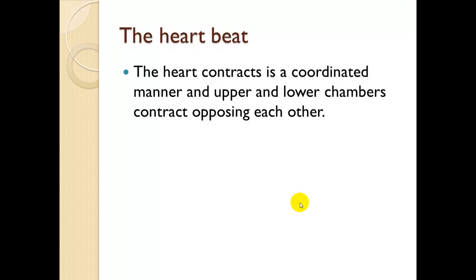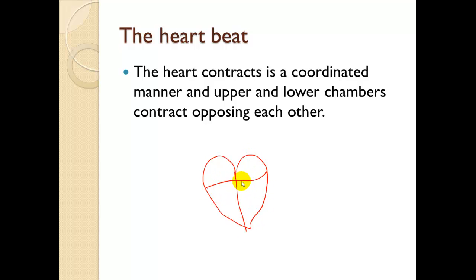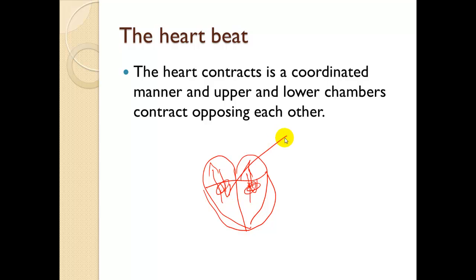The heart contracts in a coordinated manner, and the upper and lower chambers contract opposing one another. The atria contract and superfill the ventricles. Whenever the ventricles start to contract, they contract in the opposite direction. This collapses the AV valves and pumps blood into the pulmonary trunk or out to the body.